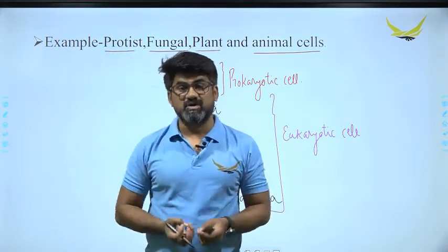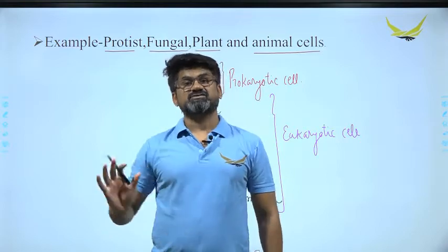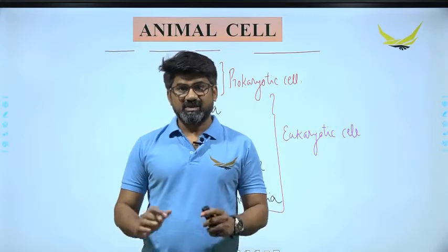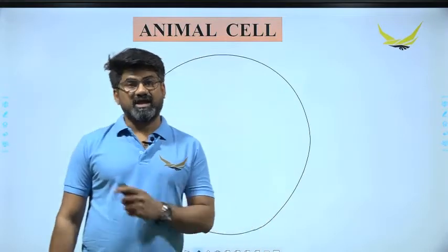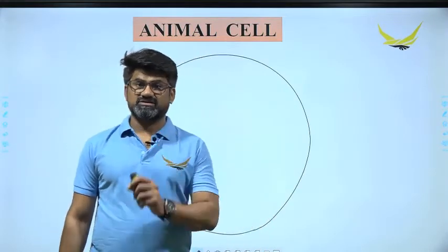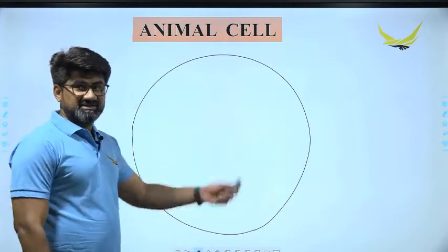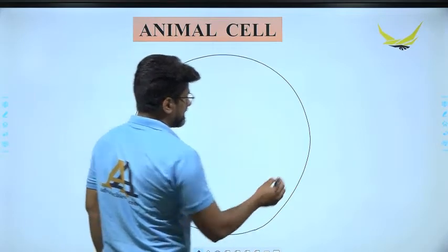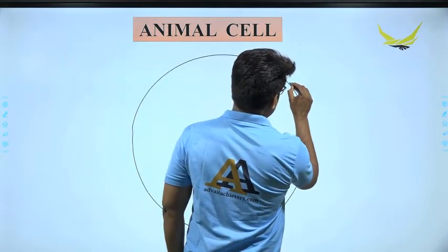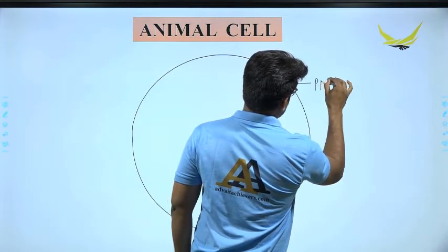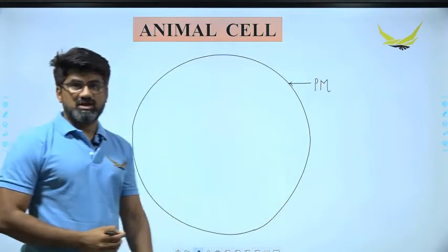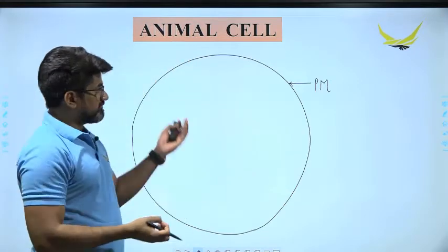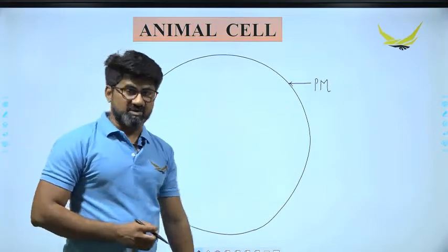Now let us look at the structure of the animal cell. The outermost membrane of the animal cell is the plasma membrane. It is the surrounding membrane that covers the cytoplasm, and that is why it is called the plasma membrane.